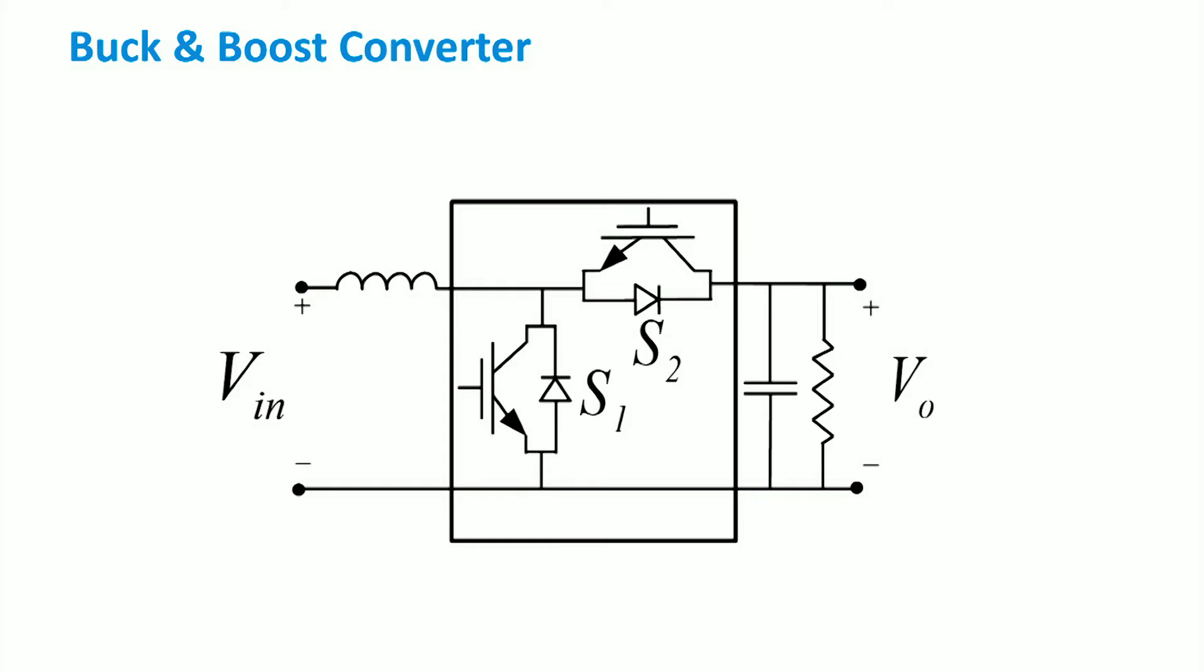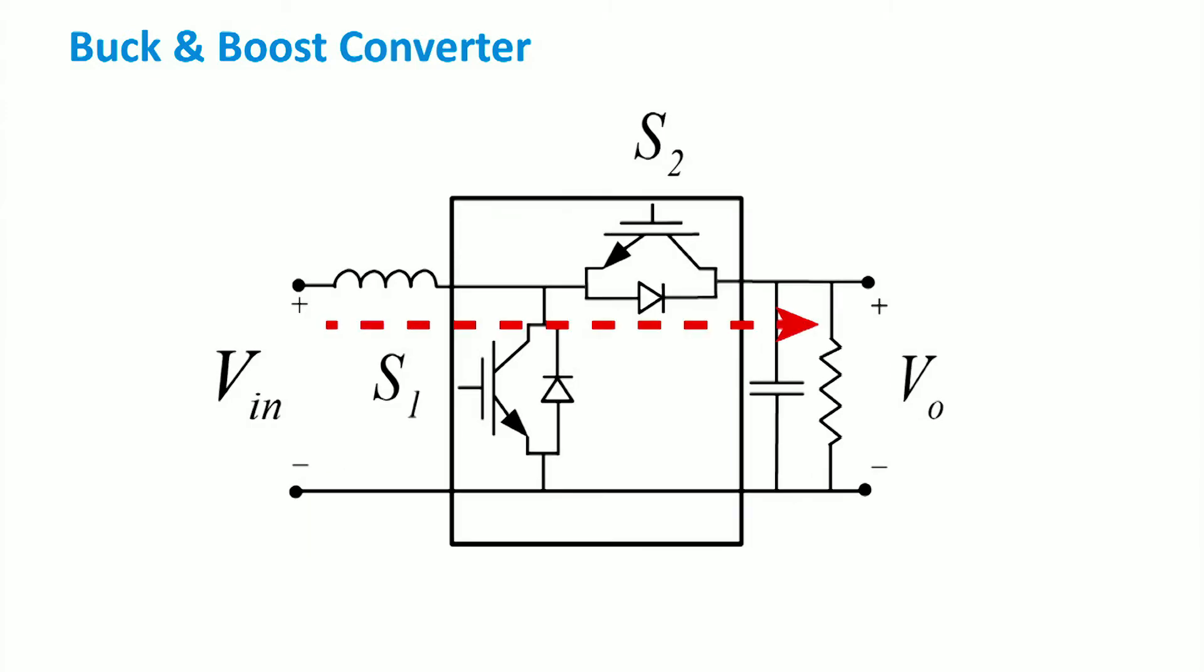If S1 is conducting, the energy in the inductor is stored. When S1 is off, the diode of S2 takes the current over and delivers energy to higher voltage levels Voutput.